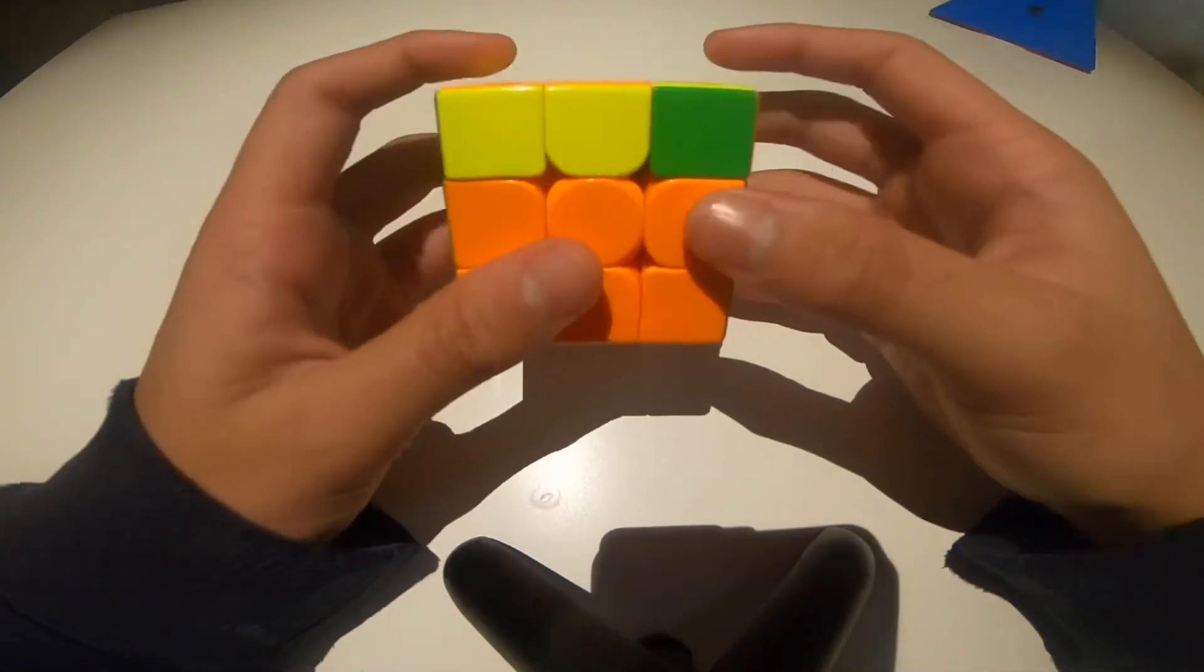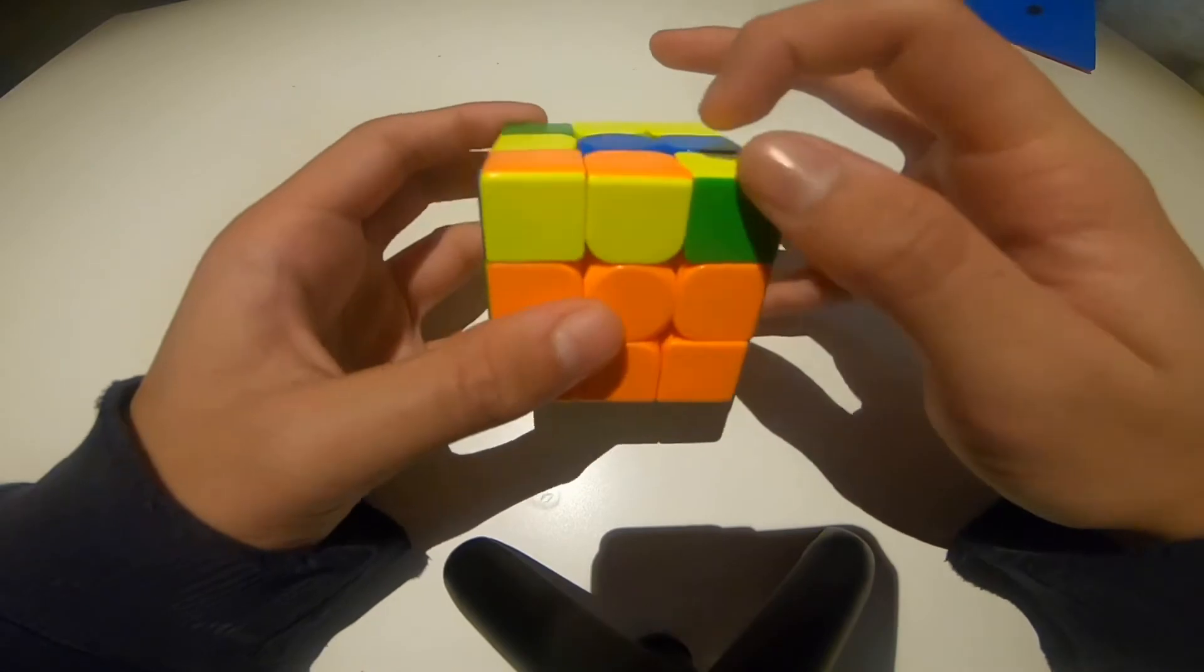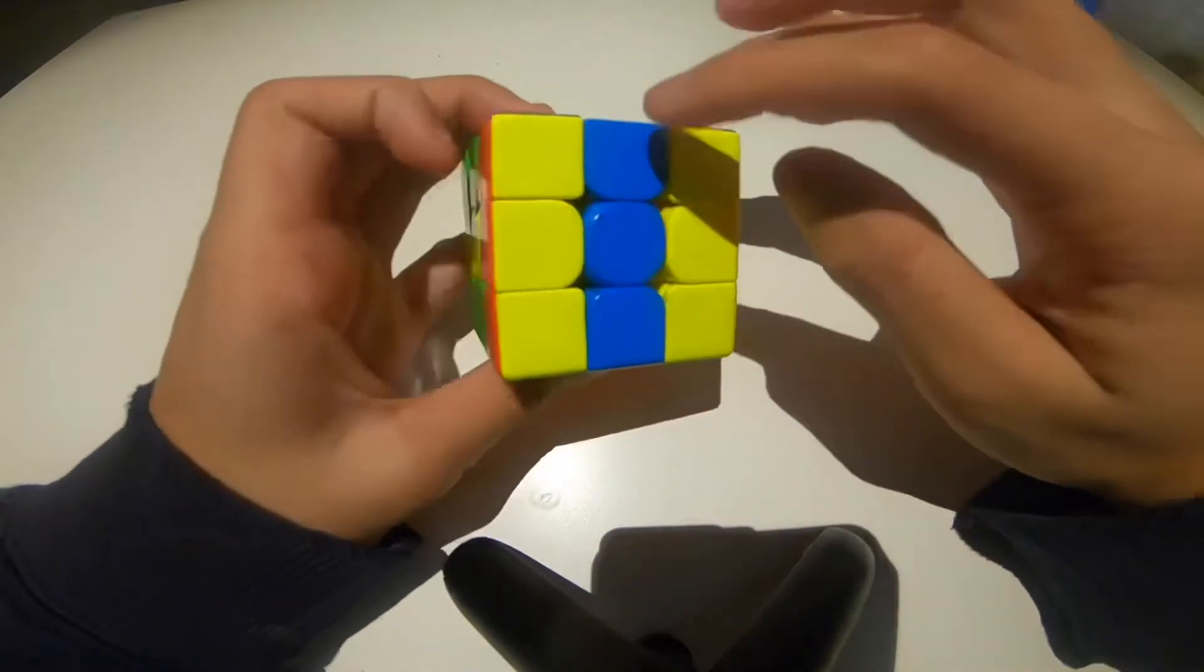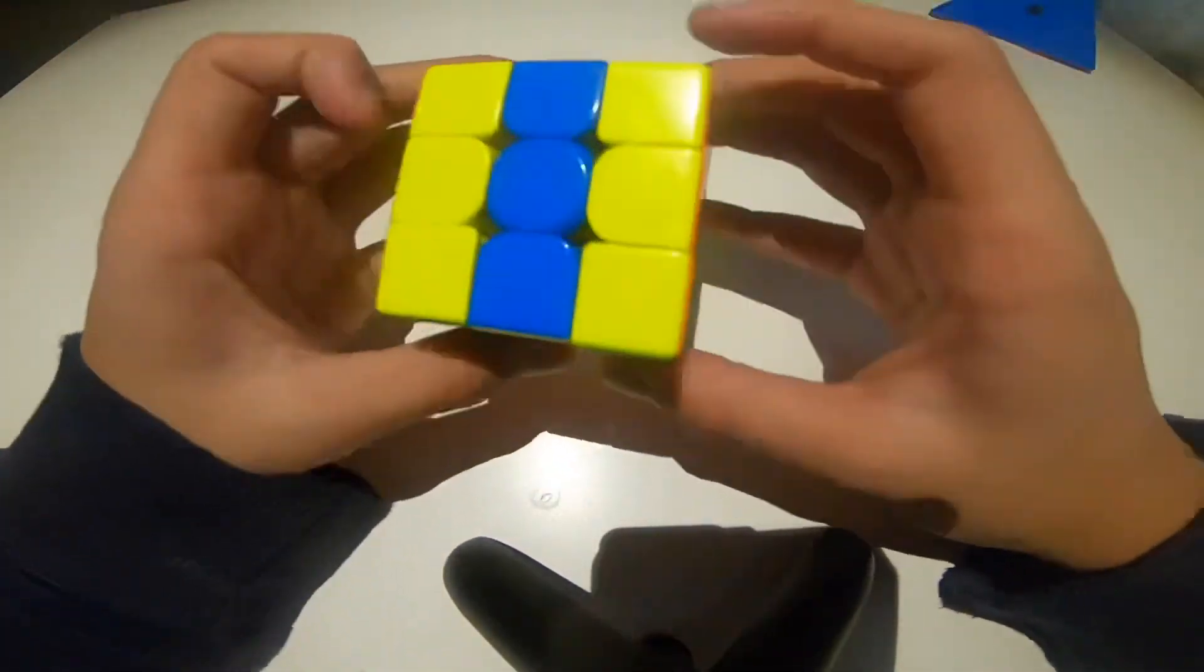Another example is in this OLL some people use, including me, this algorithm. So you basically do one S' into sexy sledge and then you basically do S S, but you have to fix up this cross edge first.